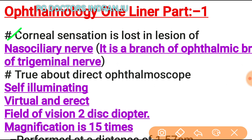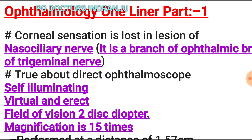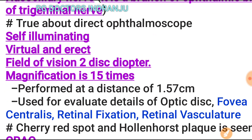Corneal sensation is lost in lesion of the nasociliary nerve, which is a branch of the ophthalmic nerve. The ophthalmic nerve is a branch of the trigeminal nerve.